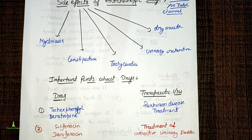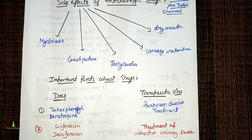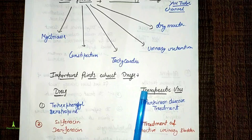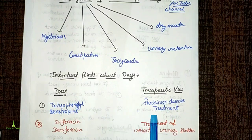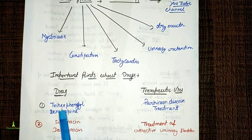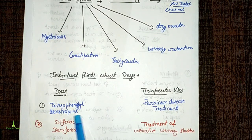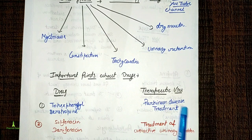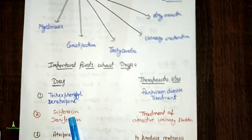Urinary retention is another side effect. Now for important points about drug therapeutic uses: trihexyphenidyl and benztropine — these drugs we classified earlier as anti-Parkinson drugs, and we use them in the treatment of Parkinson's disease.